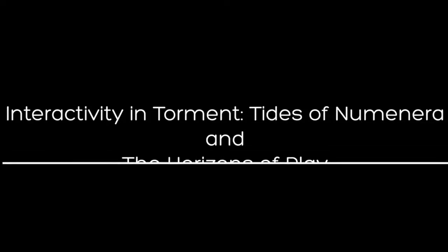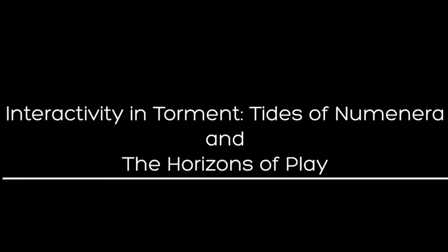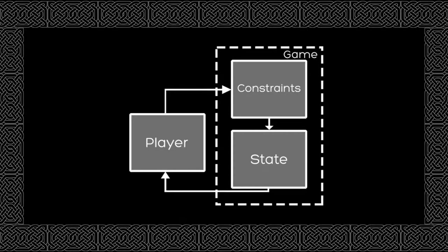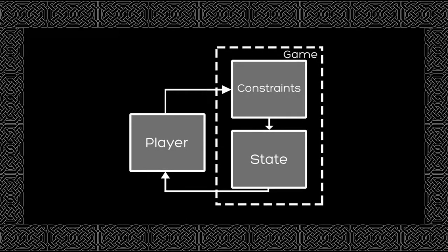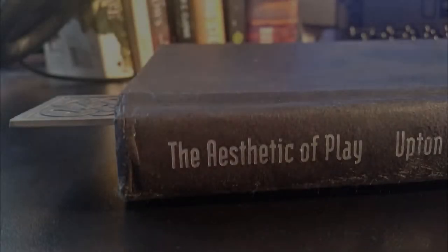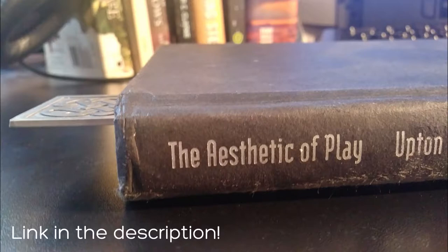In this video, I'll be relying on a lot of game design nomenclature that I've talked about in previous videos, in particular the idea of states and constraints, and how they manifest when applied to level design. All of these ideas build upon the foundations laid by Brian Upton in his phenomenal book The Aesthetic of Play. Go watch my video about it if you haven't already.